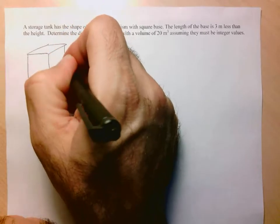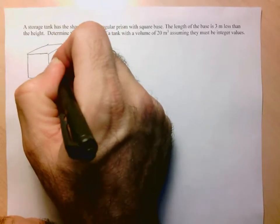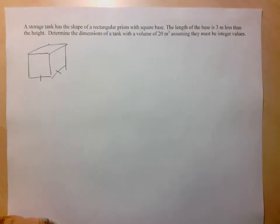So draw a rectangular prism, and it's got a square base, meaning these two bottom sides are the same. And the length of the base is 3 meters less than the height.